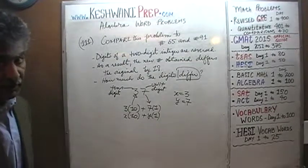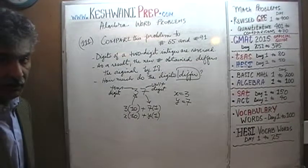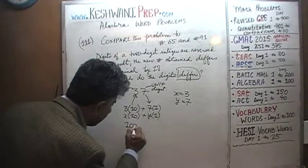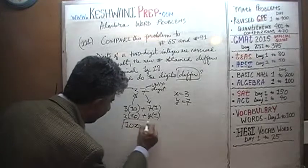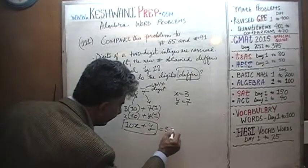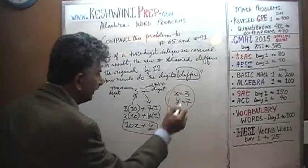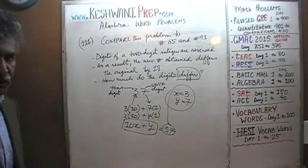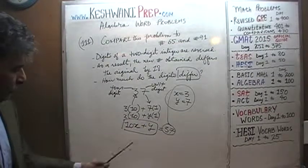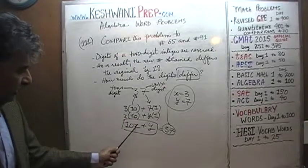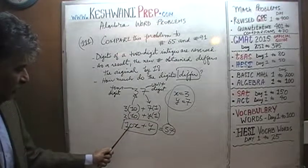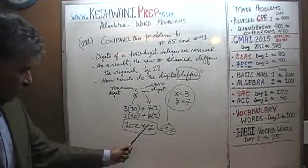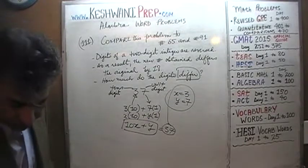We write x times 10 as 10x, and y times 1 is just y. So this is your 37 if x happens to be 3 and y happens to be 7. This is how we express a two-digit number. Whatever the unit digit and tens digit are, the tens digit has to be multiplied by 10 — that's how many tens there are. So it is 10x plus y.